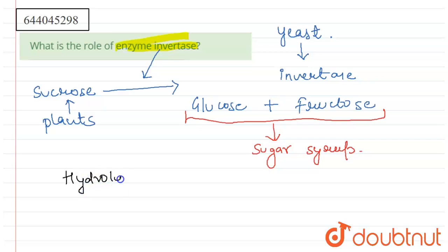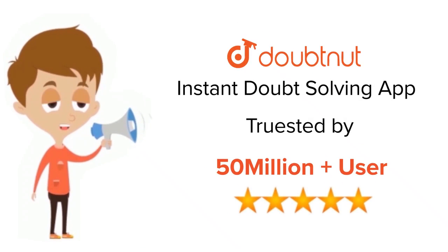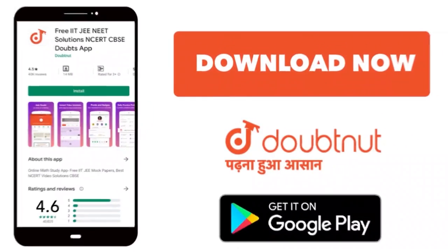Hydrolysis of sucrose into glucose and fructose, making a sugar syrup by enzyme invertase. For class 6th to 12th, IIT-JEE and NEET level, trusted by more than 5 crore students. Download Doubtnet app today.